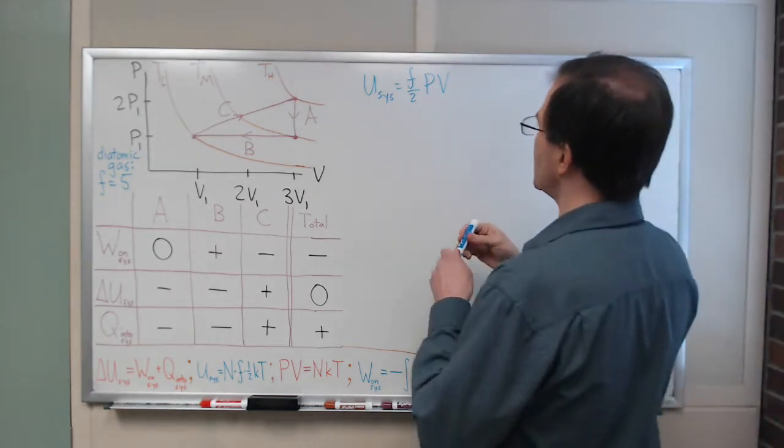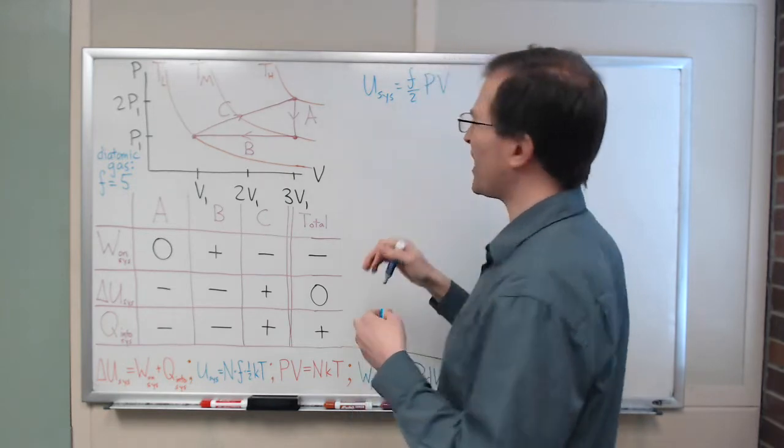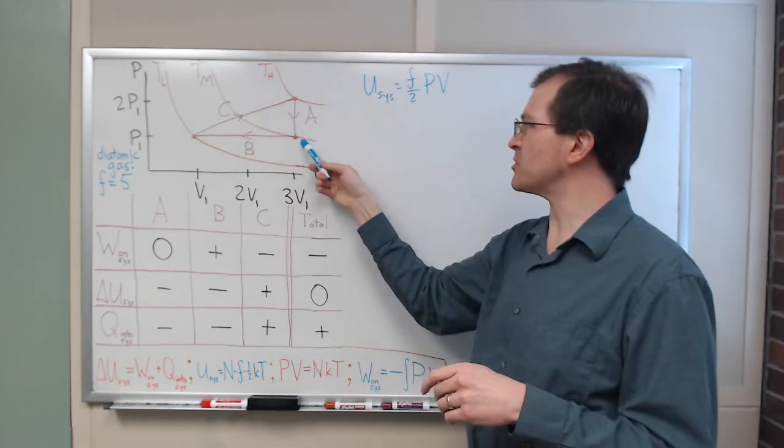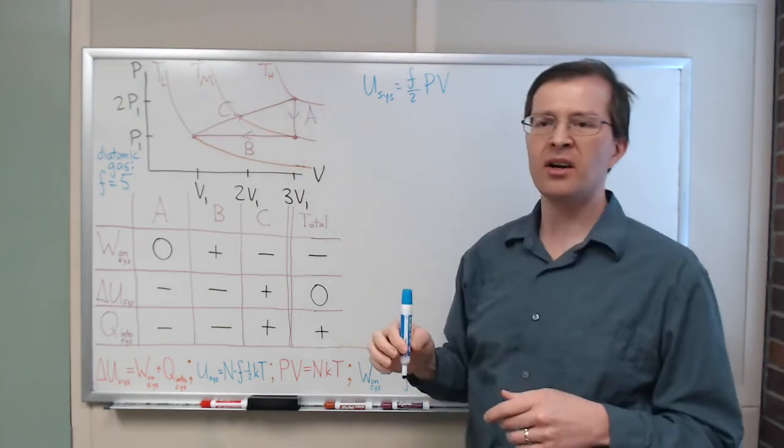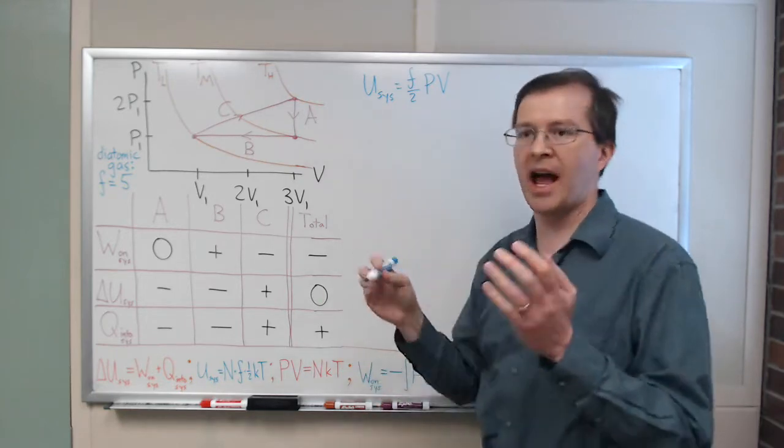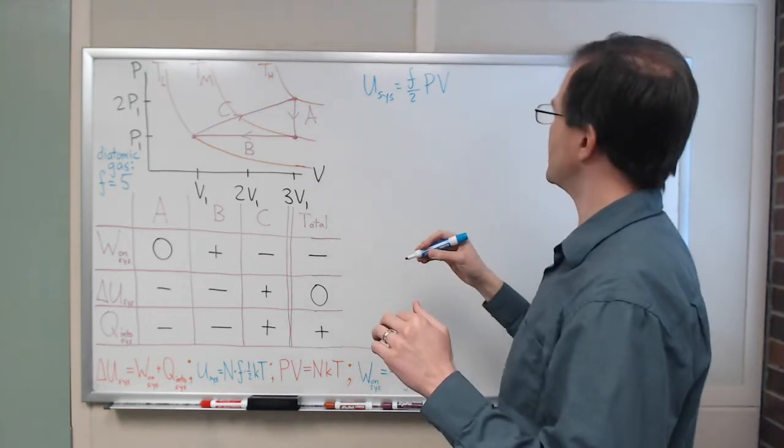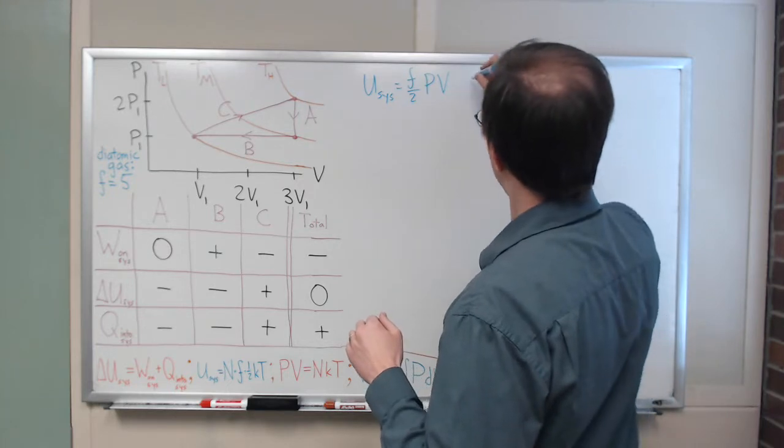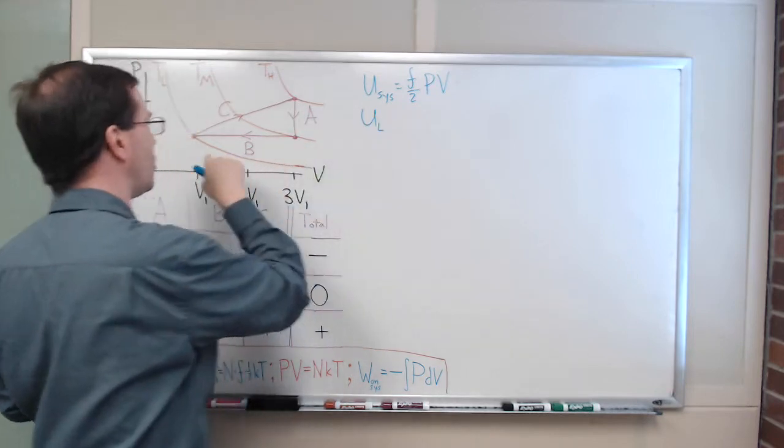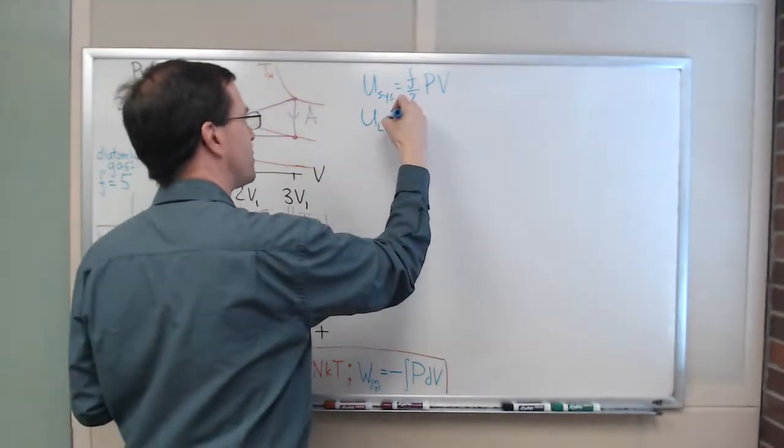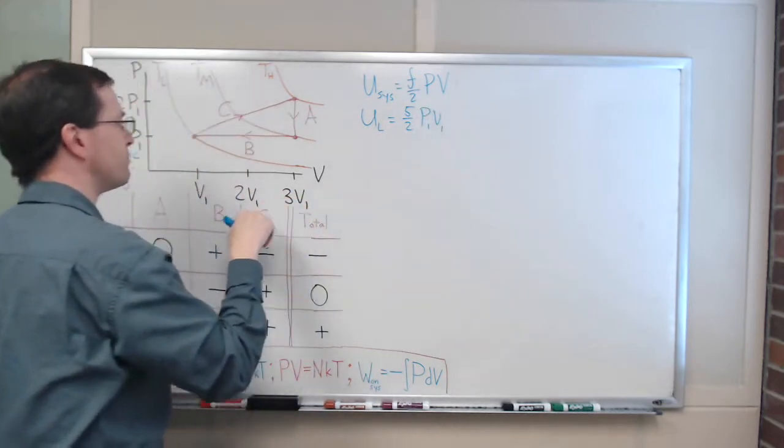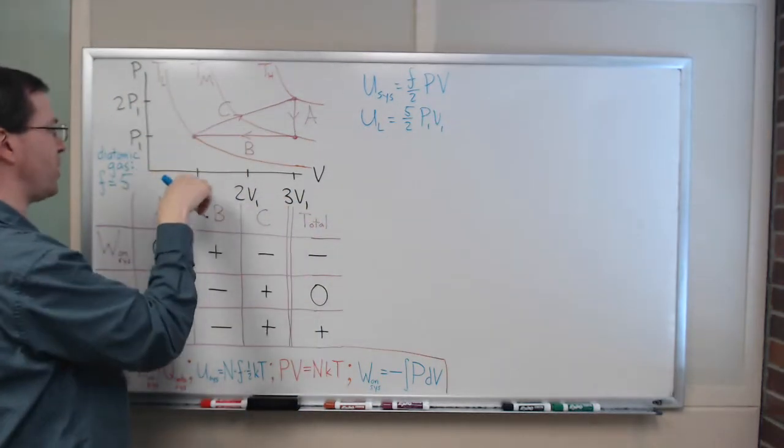That is the combination of the ideal gas law and the Equipartition Theorem. In our case, our f is five. So U system, I can even go through each of these three points. I've got my low temperature point here, my medium temperature point here, my high temperature point here. I can write down what that value is going to be for each one of those. Let me just do that.